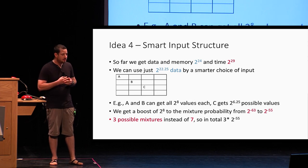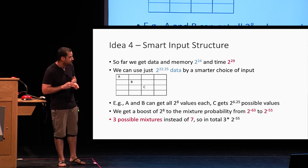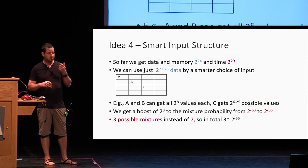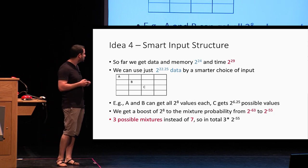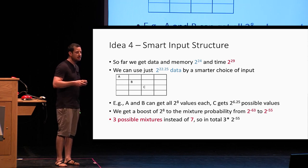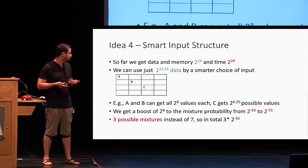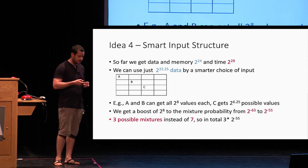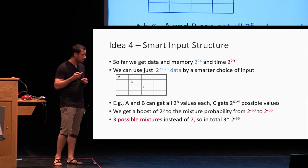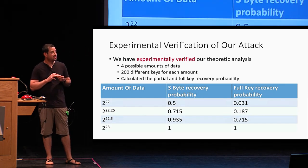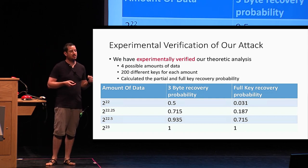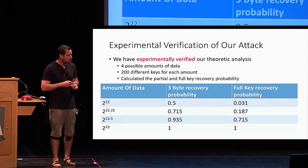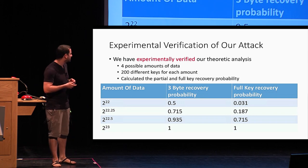We now have 2^24 data and 2^29 time complexity. To do even better, we observe that we only need part of the input structure — instead of using random values over the possible 2^32, we use a specific structure keeping at least one byte constant. This boosts the probability of getting a good mixture by a factor of 2^8, allowing us to use only 2^22.25 data. Due to the very low complexity of the attack, we were able to experimentally verify it with quite a lot of simulations, obtaining the real distribution of key recovery probabilities across different amounts of data and many keys.